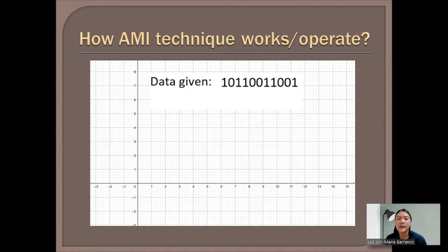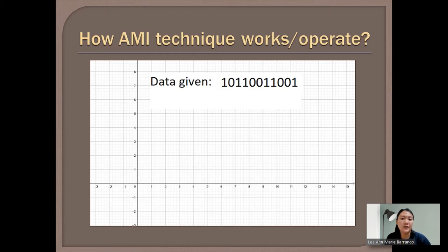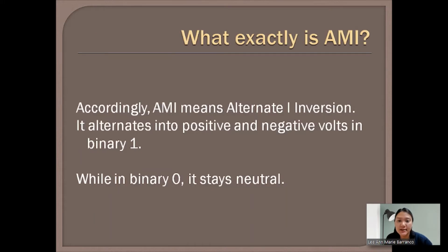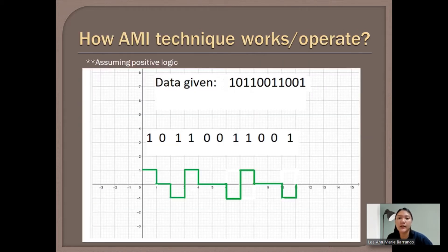For example, let's see how the AMI technique works. Given the data 10110011001, we are going to look at the voltage levels of this data. Since binary 1 alternates between positive and negative volts, and binary 0 stays neutral, this will be its graph. We are assuming positive logic, so the first 1 will start at the positive level.